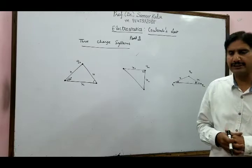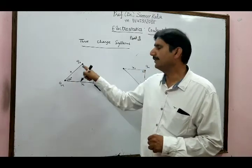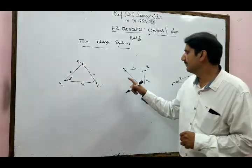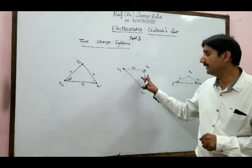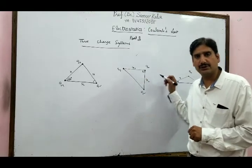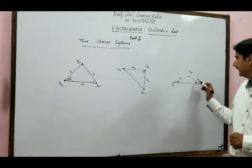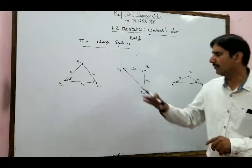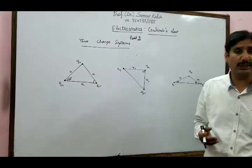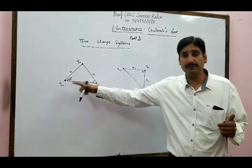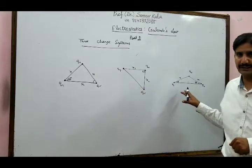These questions involve either an equilateral triangle where charges Q1 and Q2 are given and you have to find the force on Q0, or a right-angle triangle with Q1 and Q2 at two vertices, or an isosceles triangle with sides X and X and angles theta and theta. The basic approach remains the same: find the force on Q0 due to Q1, force on Q0 due to Q2, and then take the vector sum.